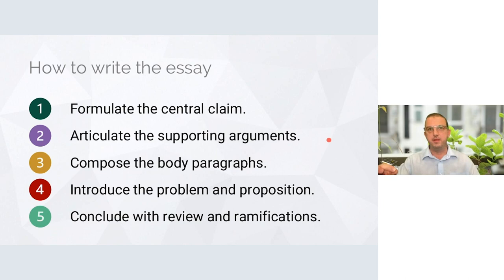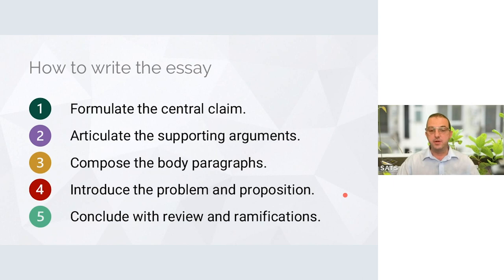The next step is to articulate how you build the case — think of it as a courtroom environment. How do you persuade the jury that your central claim is how they should vote? So you build and articulate your supporting arguments. Then you compose your body paragraphs, write an introduction that introduces the problem and the proposition, and conclude with a review and an exploration of some ramifications. I'll unpack each of these five steps in detail.